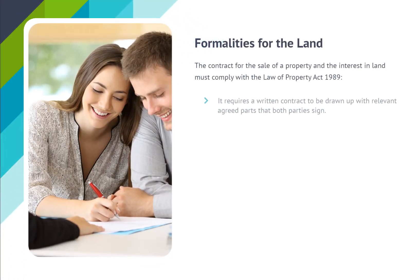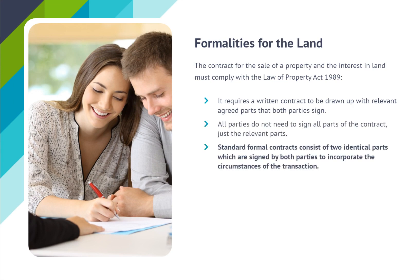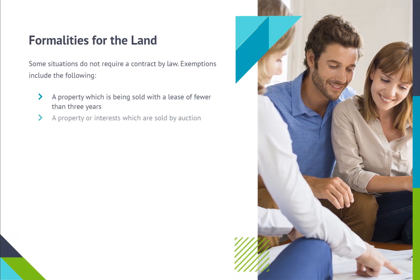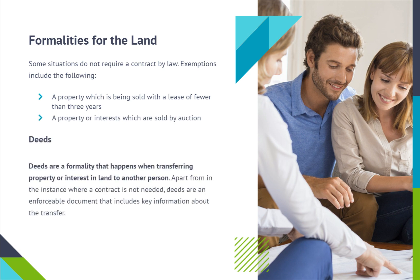Formalities for the land: the contract for the sale of a property and the interest in land must comply with the Law of Property Act 1989. It requires a written contract to be drawn up with relevant agreed parts that both parties sign. All parties do not need to sign all parts of the contract, just the relevant parts. Standard formal contracts consist of two identical parts which are signed by both parties to incorporate the circumstances of the transaction. Some situations do not require a contract by law — exemptions include a property being sold with a lease of fewer than three years, and a property or interests sold by auction.